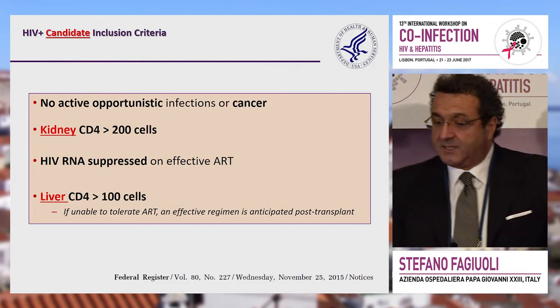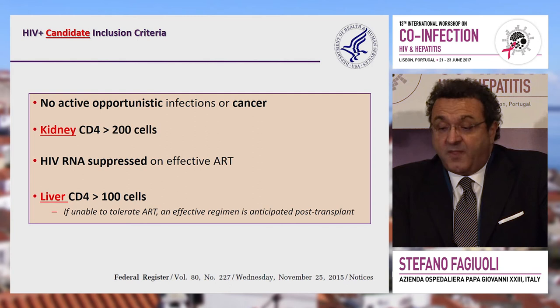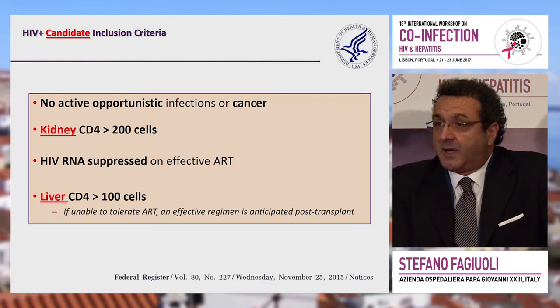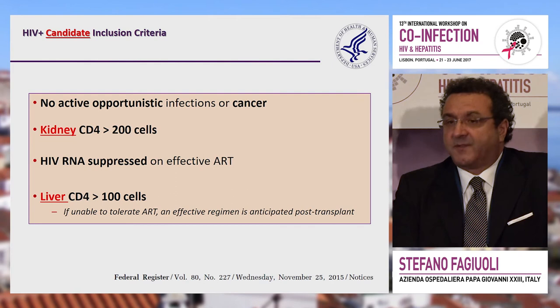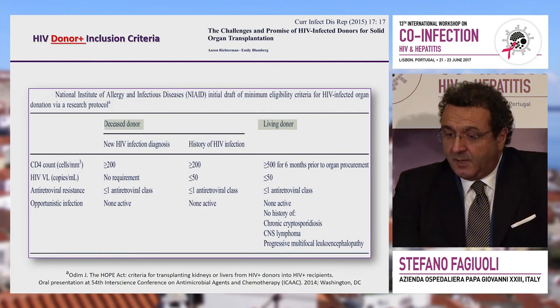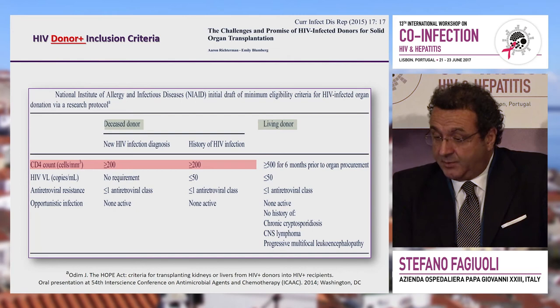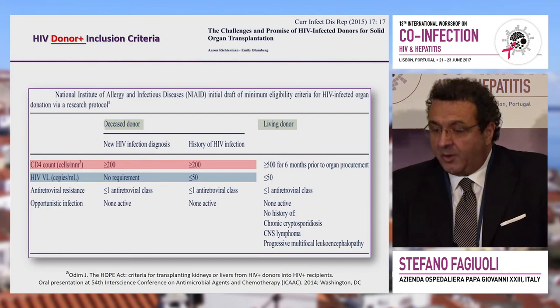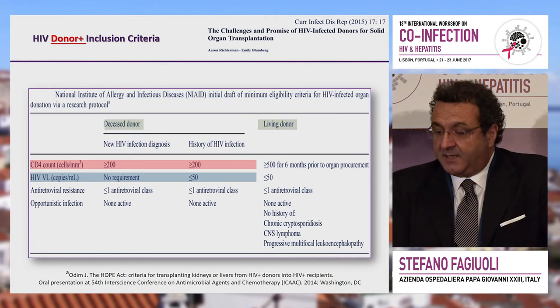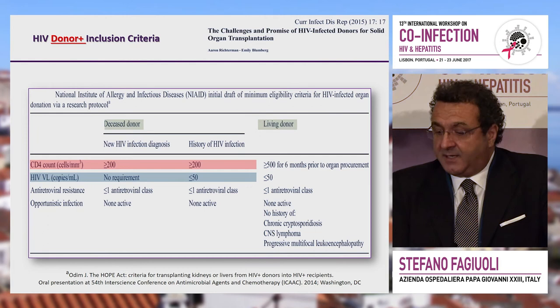The HOPE Act operates as a pilot protocol with defined rules. Recipients must have no active opportunistic infection or cancer. CD4 count thresholds differ between kidney transplant (200) and liver transplant (100), the latter due to portal hypertension, and HIV must be suppressed on effective ART. For donor inclusion: CD4 count over 200, less than 50 copies if there is a documented HIV history — if no history of HIV infection, no specific therapy requirement applies. Resistance to fewer than one antiretroviral class and no active opportunistic infection are also required. Rules were also established for living donors.